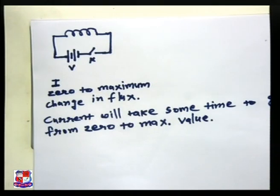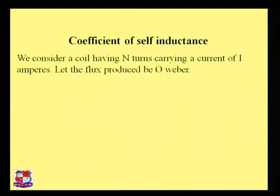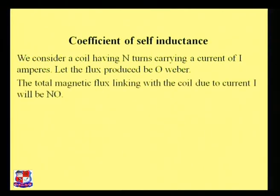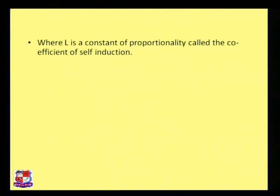Now we will see the coefficient of self-inductance. Consider a coil having N number of turns carrying a current of I amperes. The total magnetic flux linking with the coil is Nφ, and Nφ is proportional to I. Putting a constant of proportionality, we have Nφ = LI, where L is called the coefficient of self-induction. Therefore L = Nφ/I, and the unit of L is Henry.